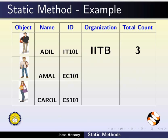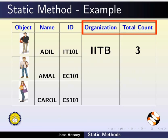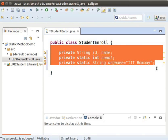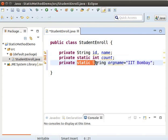Here again we are representing the StudentEnroll class. Recall that the variables name and id are handled as instance variables. The variables organization and total count are common to the entire class, so they can be treated as static variables. Type the following code to represent the StudentEnroll class. Note that there are two static variables: count and ORGName.